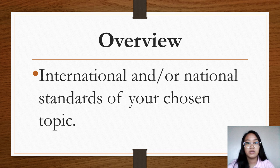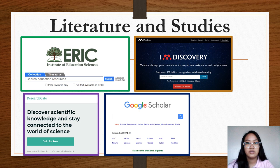The literature or studies may be international and/or national standards of your chosen topic. There are different sites where we can search for literature and studies online: ERIC or the Institute of Education Sciences, Mendeley, ResearchGate, and Google Scholar. If you have other sites where you can find literature and studies, you may use them.